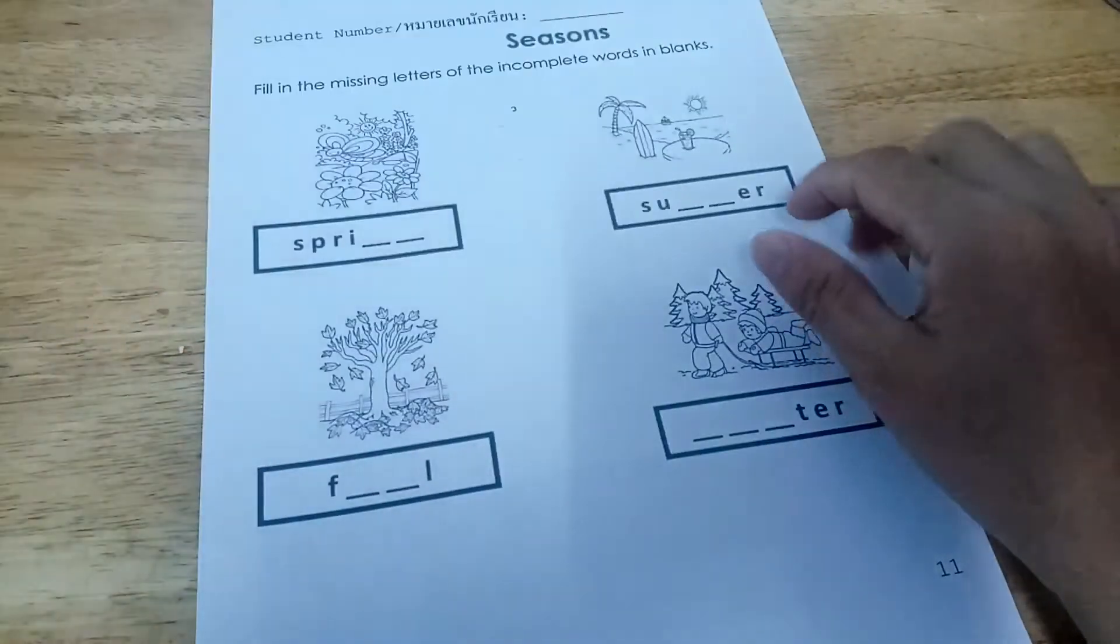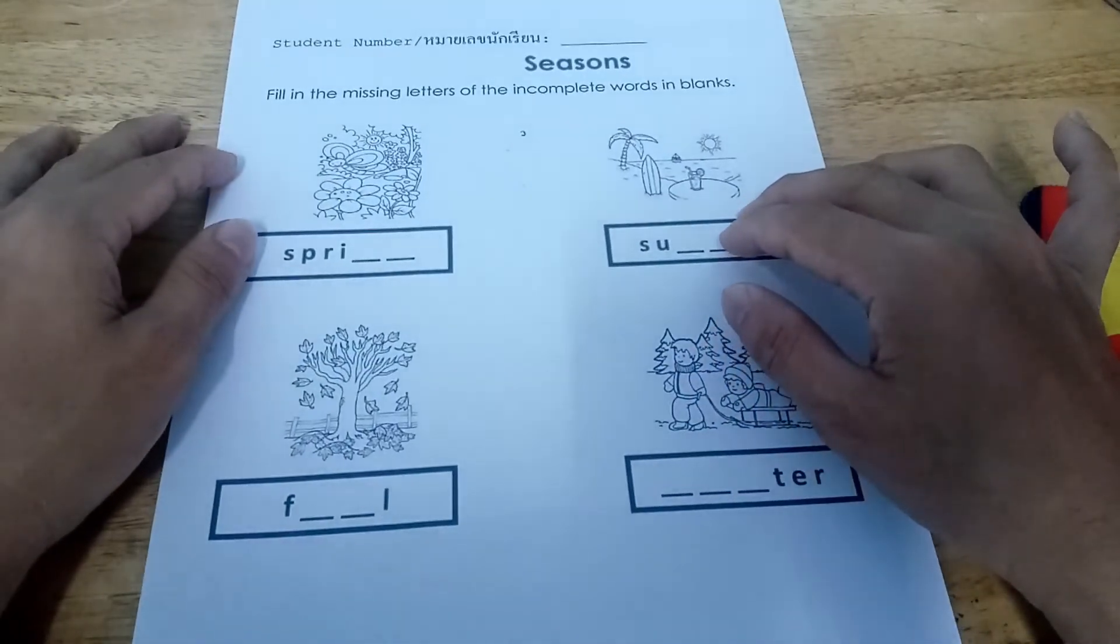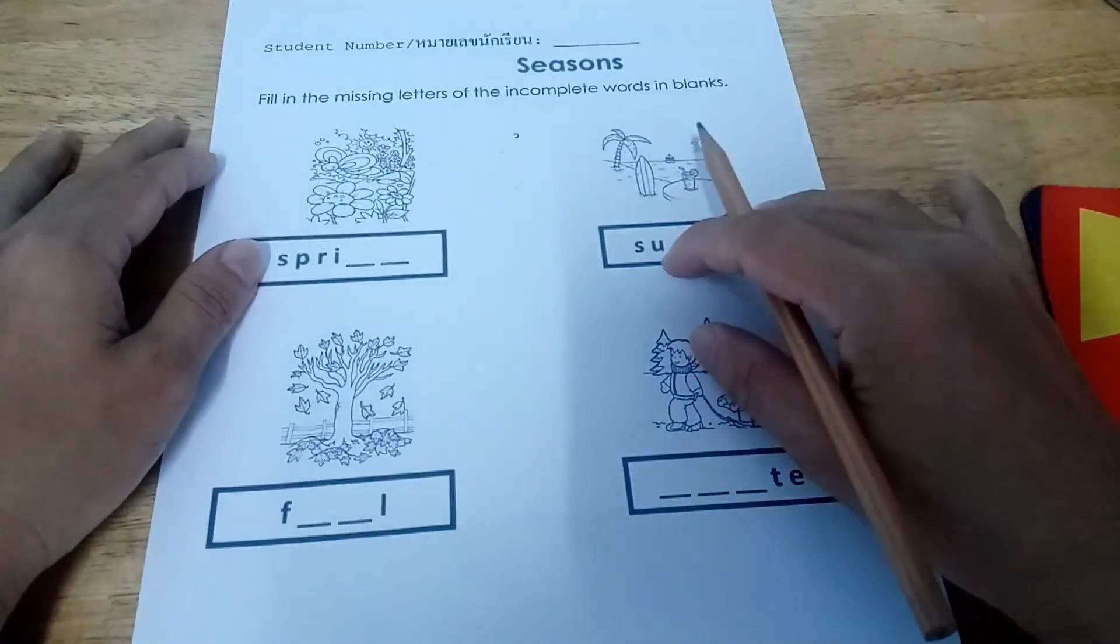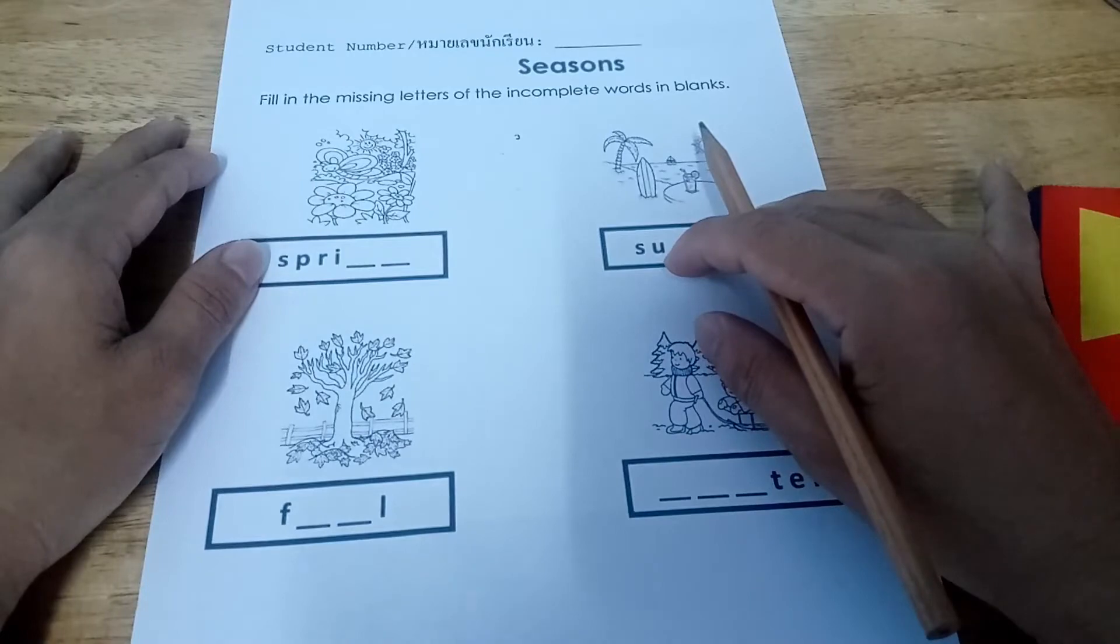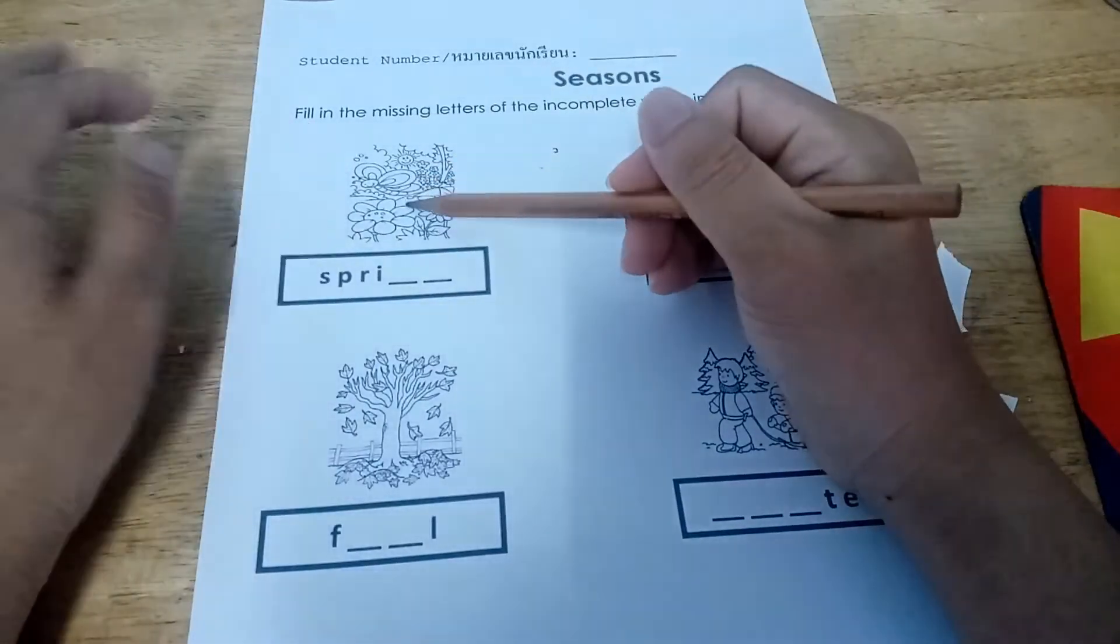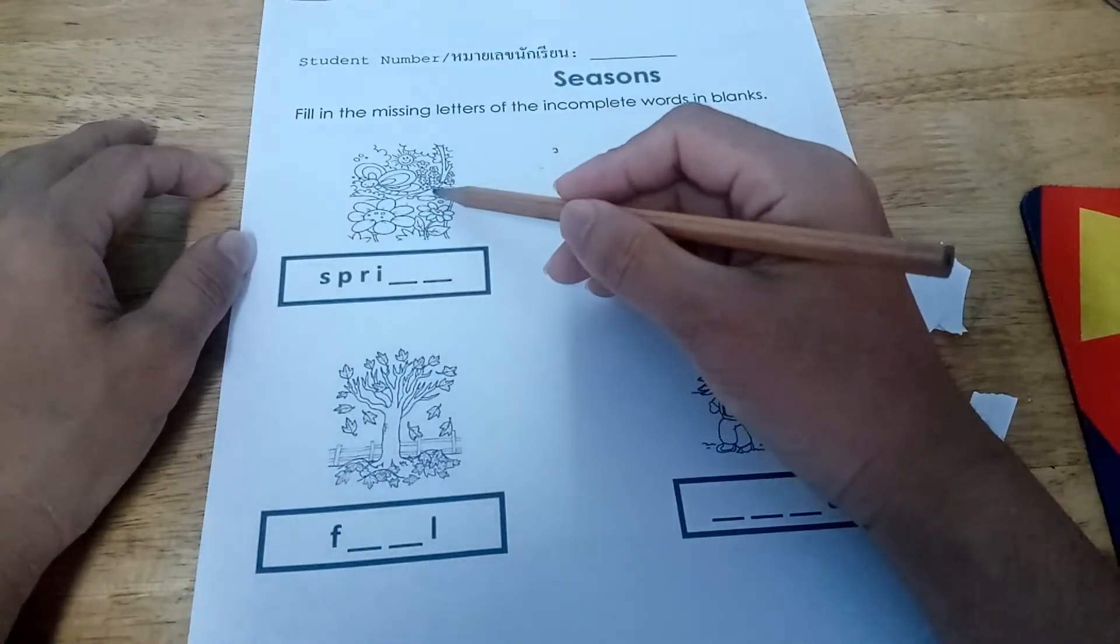Okay, next is this. Let's fill in the missing letters of the incomplete words in the blank. You're going to fill in the missing letters in the incomplete words. Okay, this season is spring. Spring. Again, let's say spring.